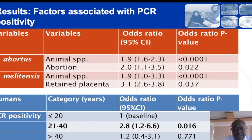We found a significant association between occurrence of abortion and the presence of Brucella botas, while Brucella militensis was associated with retained placenta in animals.